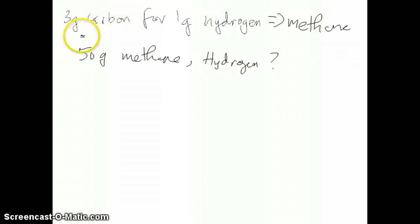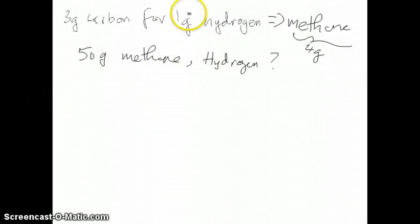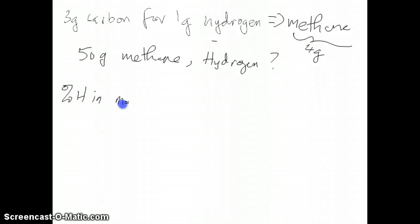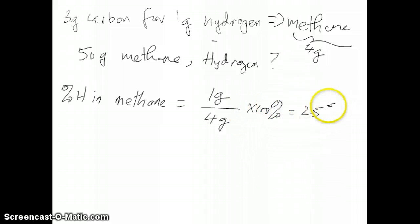If methane only contains carbon and hydrogen, and you have 3 grams of carbon for every 1 gram of hydrogen, that means you have 4 grams of methane total. That allows us to calculate the percent mass of hydrogen in methane: percent hydrogen = 1 gram over 4 grams times 100%, which gives us 25%.